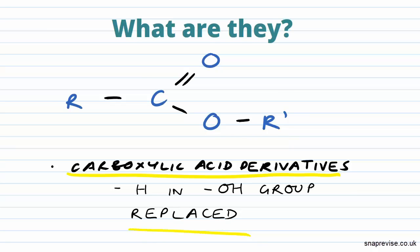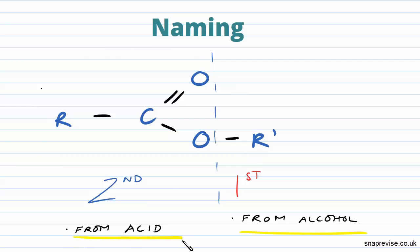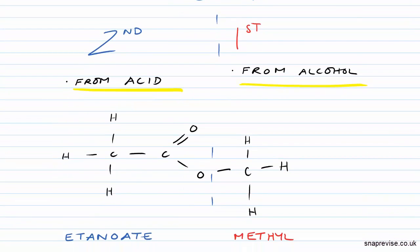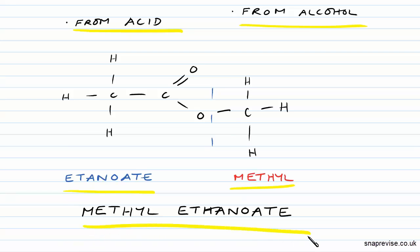So how do we name our esters? Well, I think it's quite easy to imagine you're dividing your ester into two parts. This R group that's replaced the hydrogen in the OH group is the first part of the name, and this comes from the alcohol that we use to form them. The second part is everything else, and that comes from the acid that we use to form them. So if you have a look at this example here, you can see that the R group is a methyl group, whereas the part from the acid was from ethanoic acid, so it's ethanoate. So we have methyl ethanoate.